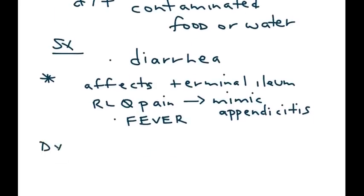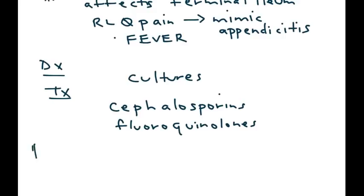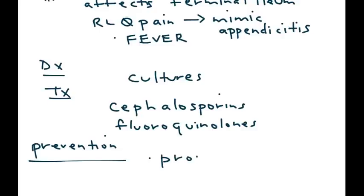For diagnosis, similar tests are done such as blood cultures. Treatment involves antibiotics, most commonly either cephalosporins or fluoroquinolones. As always with these types of illnesses, prevention is very important, so proper food handling is of great importance in preventing this disease.